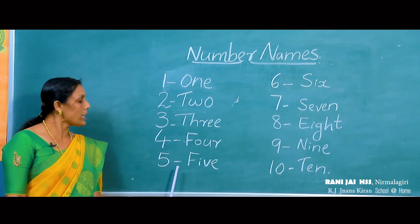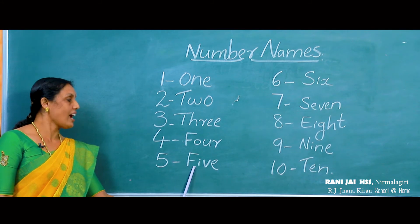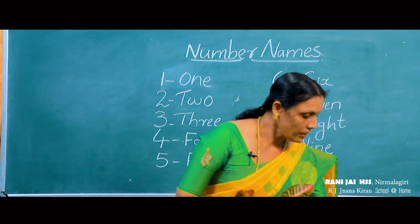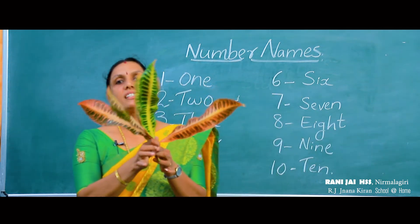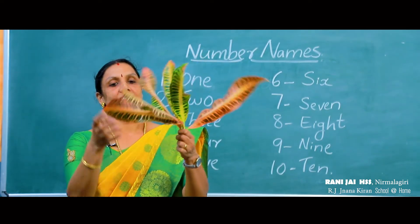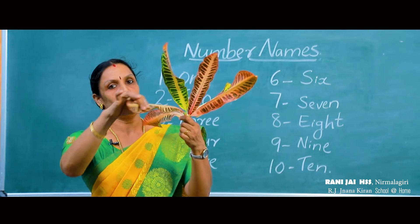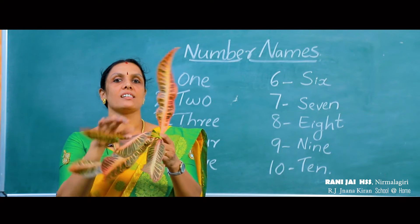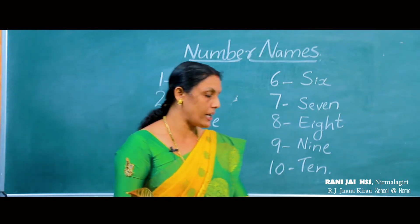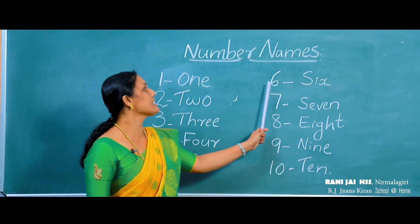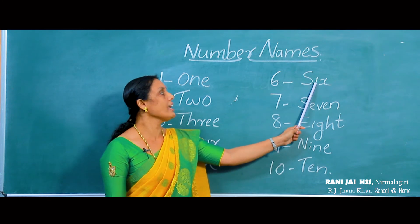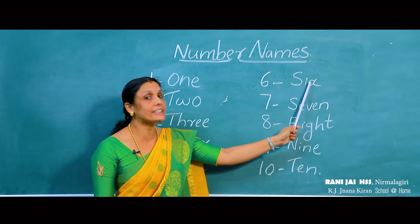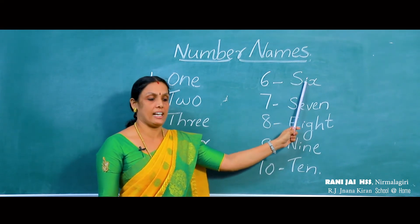Spell the number 5 as F-I-V-E. Next, how many leaves? Shall we count it? 1, 2, 3, 4, 5, 6. The number name of 6 is S-I-X. Spell the number 6 as S-I-X.